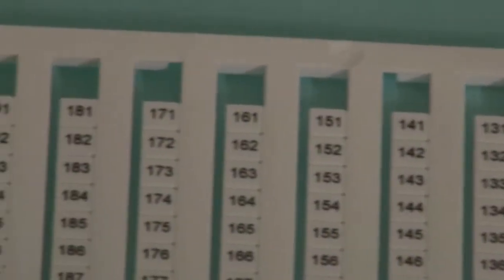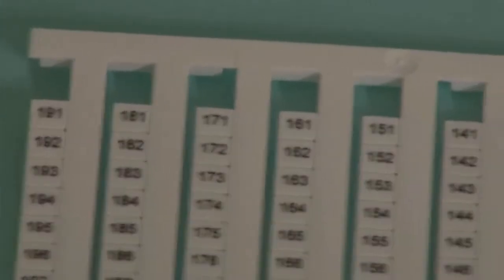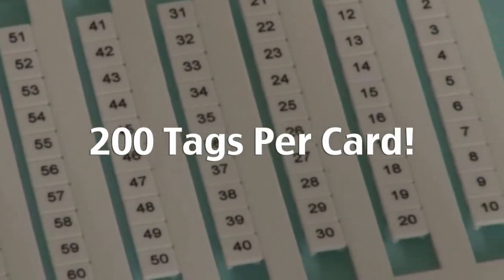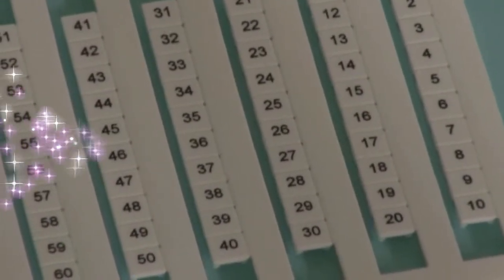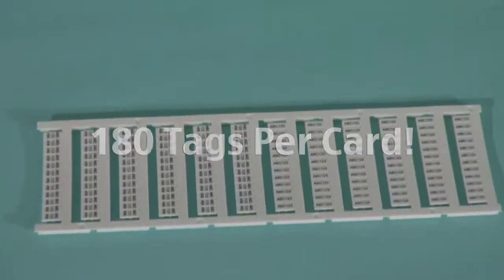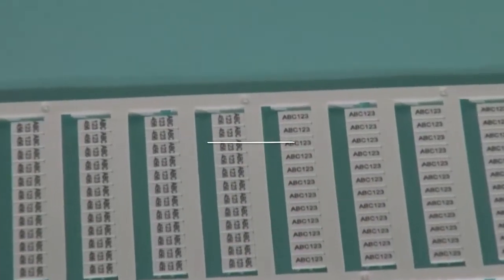The 5mm and 6mm DEK multi-card format is 200 tags per card. The 6.5mm format is 180 tags per card. What if you need more than 3 characters on your marking tags? Glad you asked!